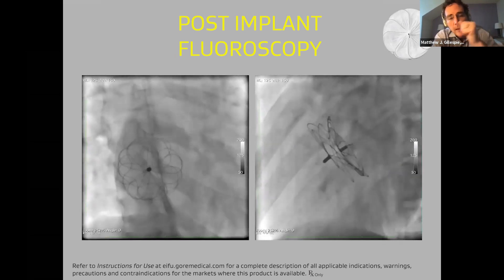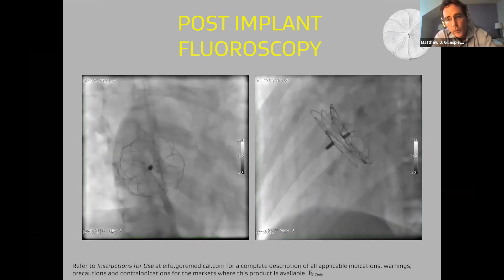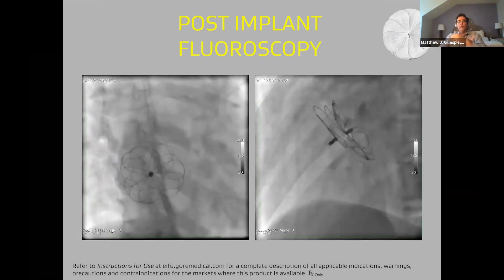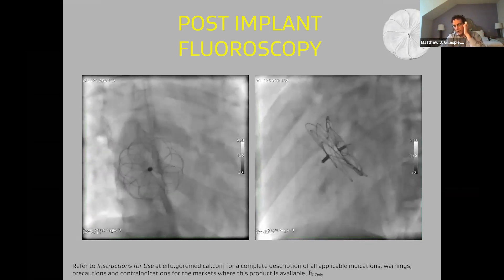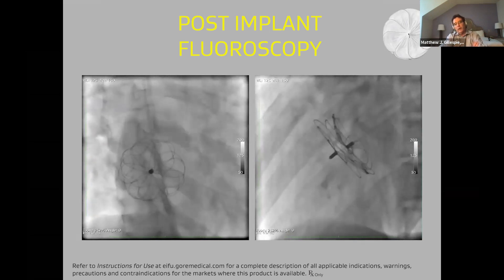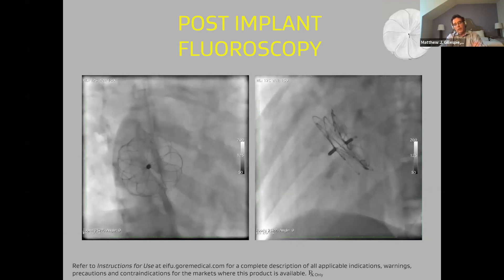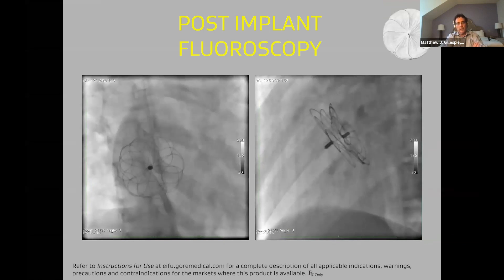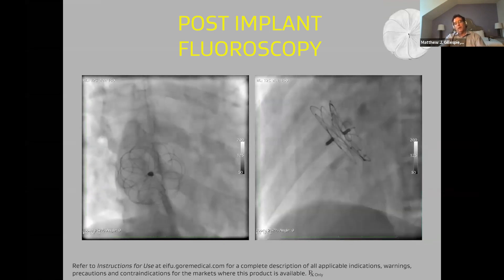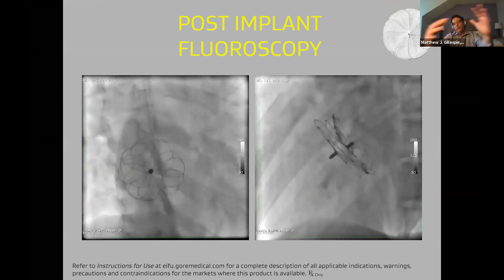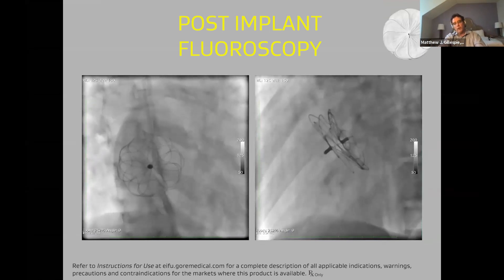What I've noticed with the 44 device is that it tends to pull even flatter than the smaller devices — I don't know if that's unique to my experience, but that device really does lay flat. Looking at both views, you saw how hard I was pushing and pulling it trying to deflect it, so I was pretty confident it was straddling the septum, even though I could never find that LAO view demonstrating the disc separation I like to see.